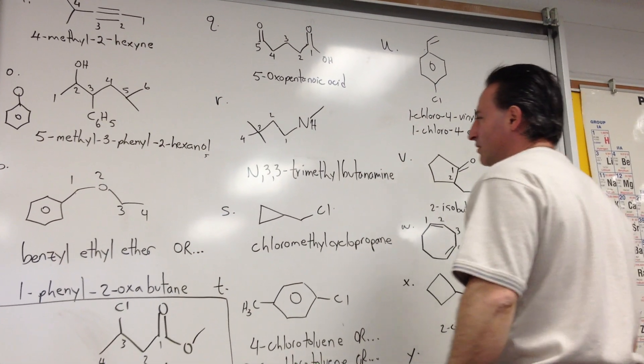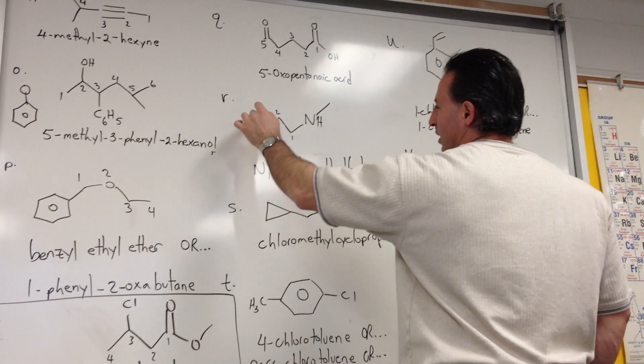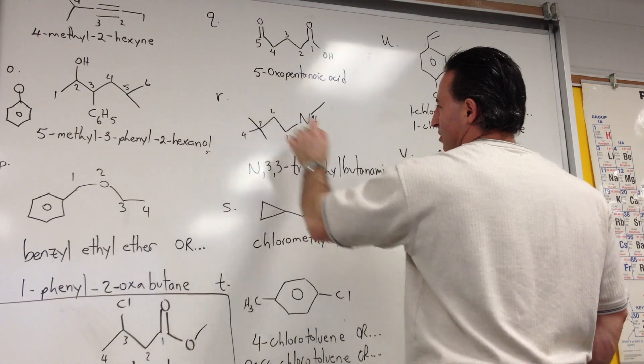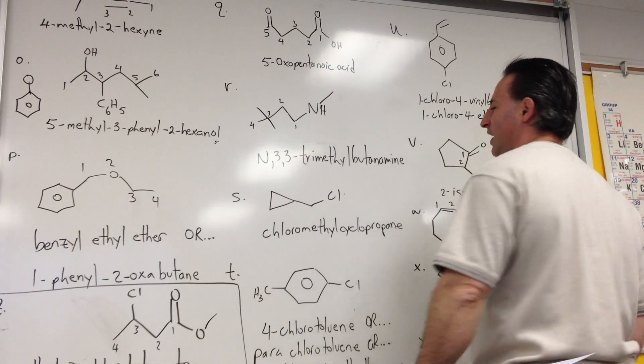R is an amine. That is, if you look along this chain, 1, 2, 3, 4, there's a methyl group, two methyl groups in the third position, and a methyl group on the end, so we say N,3,3-trimethyl-butanamine.